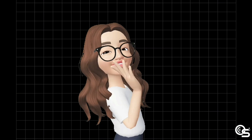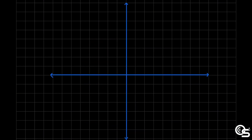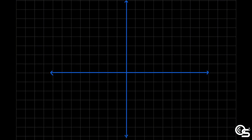Now let us proceed to graphing the parabola. We will plot all the points we have computed, including the given. We start at the vertex (0, 0). Next, the focus at (0, negative 3) — we travel 3 units downward. Then the endpoints of our latus rectum: LR₁ at (negative 6, negative 3) and LR₂ at (positive 6, negative 3).